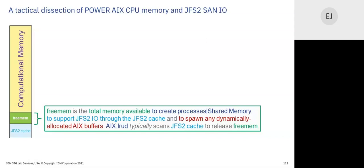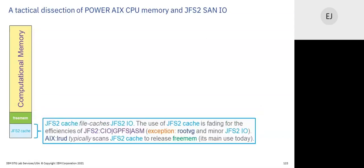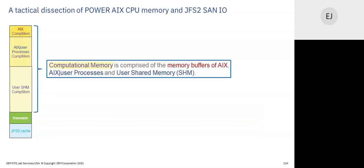LRUD scans the cache to release free memory — because paging space page-outs take computational memory and write to paging space, which is not a good way to make free memory. You want LRUD only to scan the cache to release free memory, which is why even if you don't use much free memory, you must have some cache, because that's where free memory comes from. The cache is fading for the efficiencies of direct I/O: CIO, GPFS, ASM, and other direct I/O methods — we're using the old-fashioned JFS2 buffered cached I/O less often.